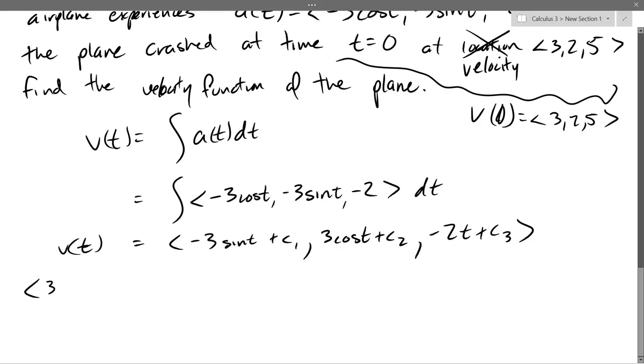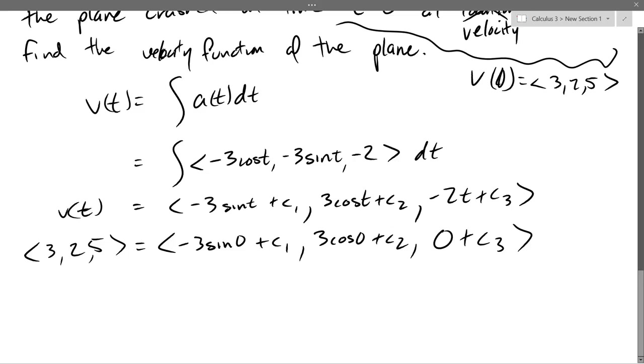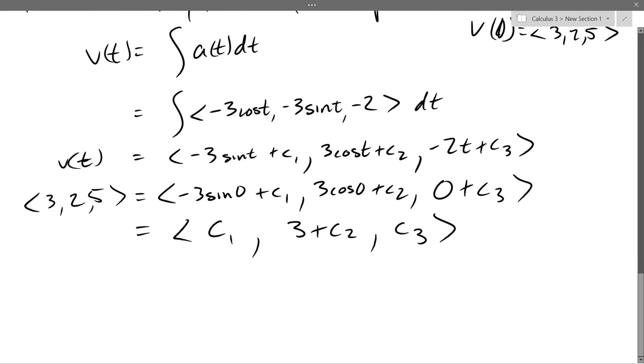So we have 325 equals, I'm just going to put zero where I see t, negative 3, sine zero plus c1, 3 cos zero plus c2, 0 plus c3. So I know c3 right away. And we'll just assign zero with zero, so we just get c1 comma cos zero is 1. So we get 3 plus c2, c3. So we're going to tell right away what c1, c2, and c3 are.